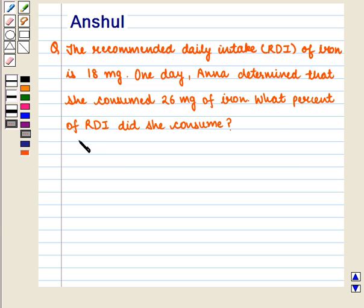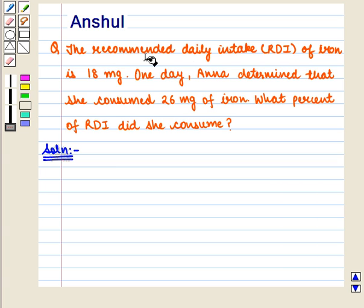What percent of RDI did she consume? Let us start with the solution. Here we are given that the recommended daily intake of iron is 18 mg, and Anna consumed 26 mg of iron.